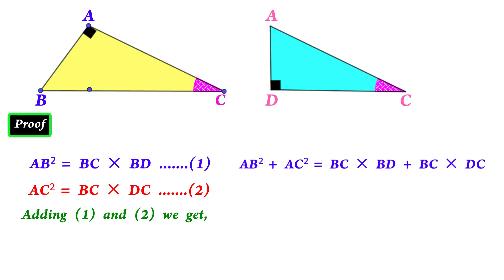On the left side, AB² + AC². On the right side, BC is common. We have BC × BD + BC × DC, which equals BC × BC, which is BC². This is what Pythagoras theorem is all about.